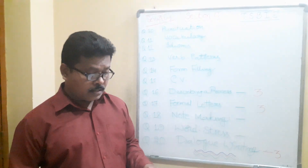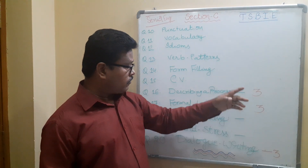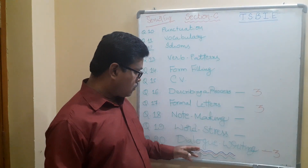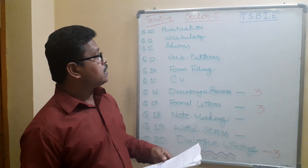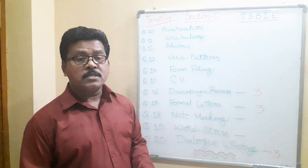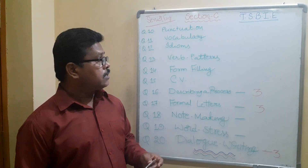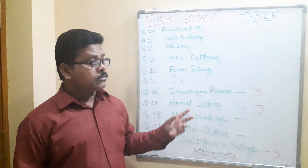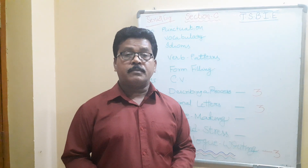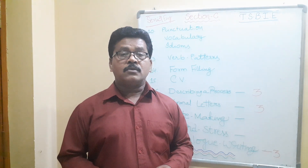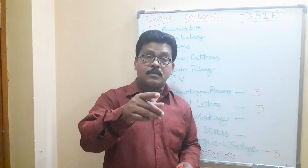So in Section C, for letters 3 will be given and you write one, for process 3 will be given and you write one, and for dialogue writing 3 will be given and you write one. These are all the important points for Section C. Yesterday we discussed sections A and B, and now Section C completes the second year paper preparation. I hope you've understood the concepts and found the video useful. Please like, share, comment, and subscribe to my channel. See you very soon, take care, bye bye.